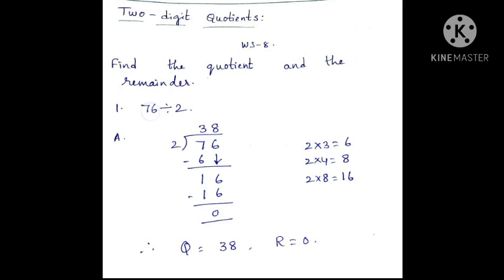First question: 76 divided by 2. What is the question children? 76 divided by 2. Here, what is the divisor? 2. What is the first digit? 7. Compared to the divisor, this 7 is more, right? So what should we do? We have to recall the table.